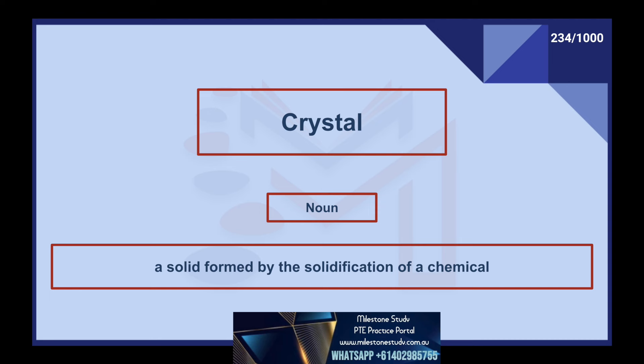Crystal, noun: a solid formed by the solidification of a chemical. Cue, noun: a word or action during a stage play to tell an actor to speak. Cumbersome, adjective: difficult, problematic. Cure, noun: a medicine or treatment that makes an ill person become healthy. Curriculum, noun: group of related courses in a school or college. Cyclic, adjective: a series of regular and repeated actions.